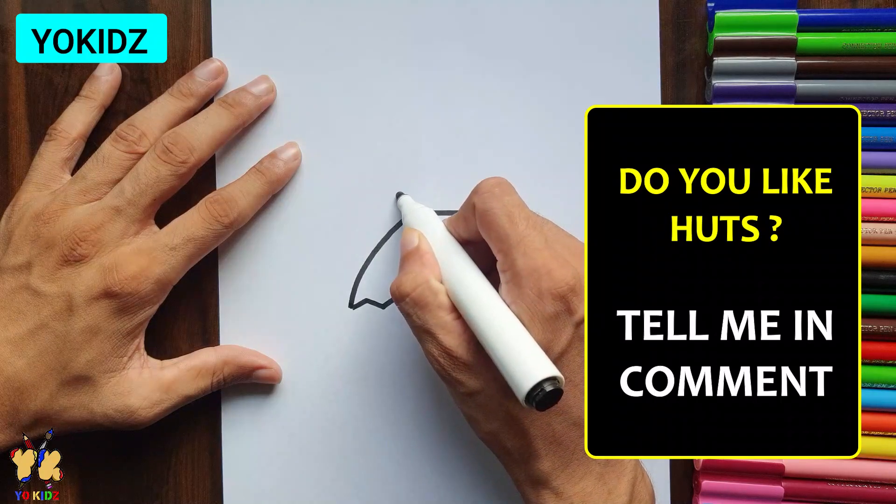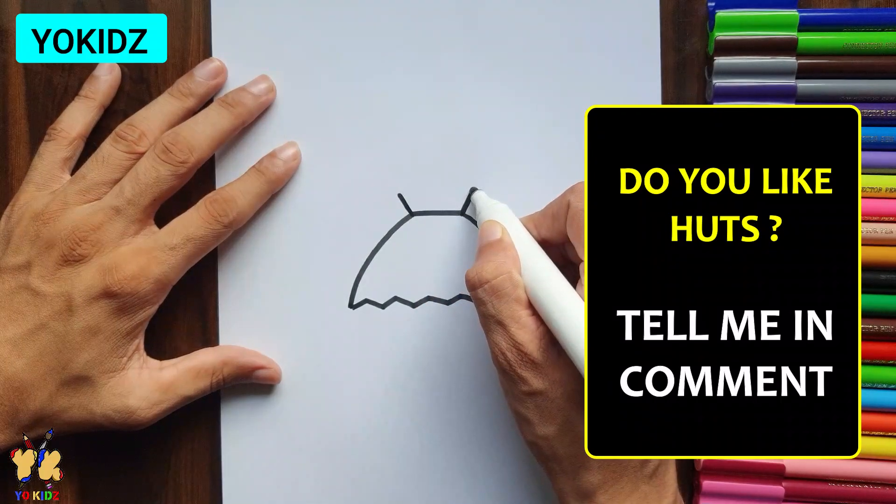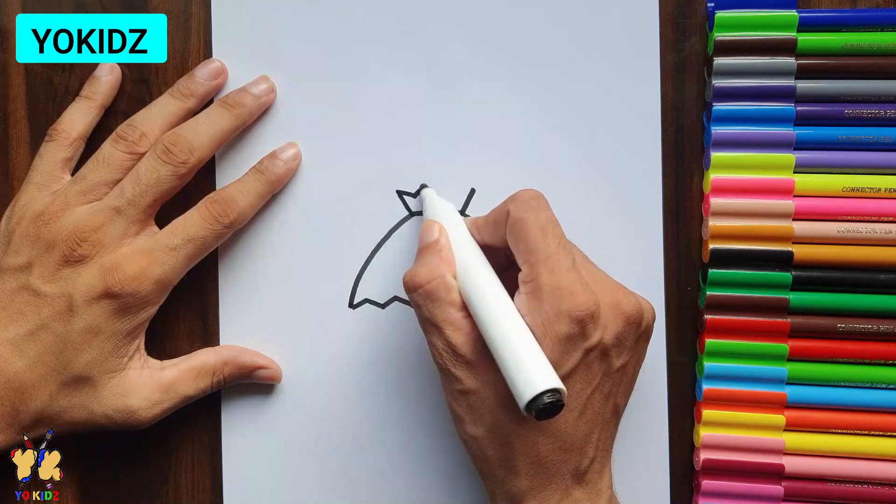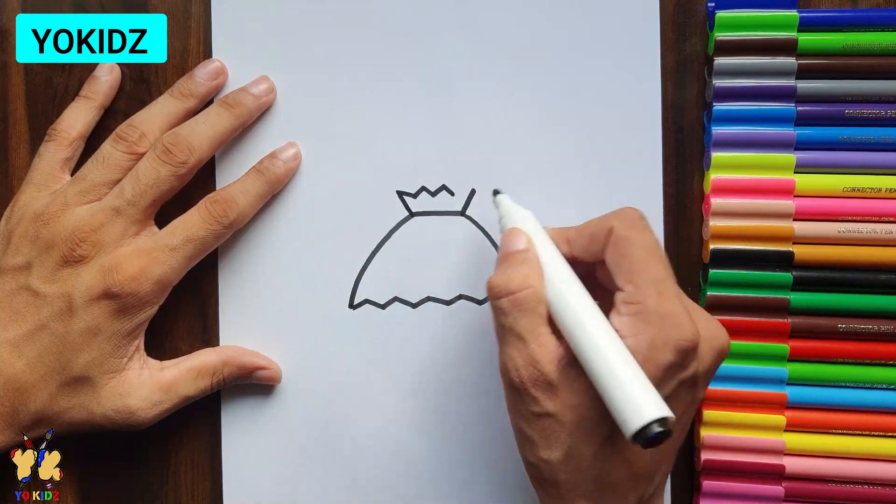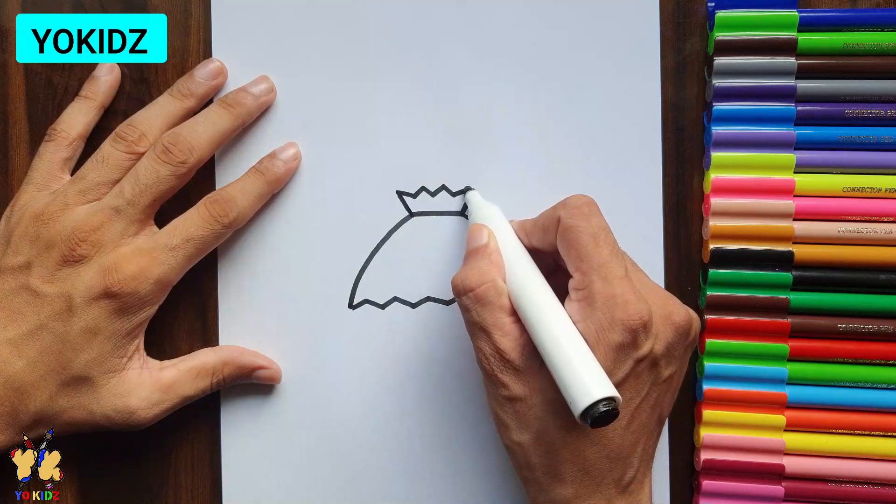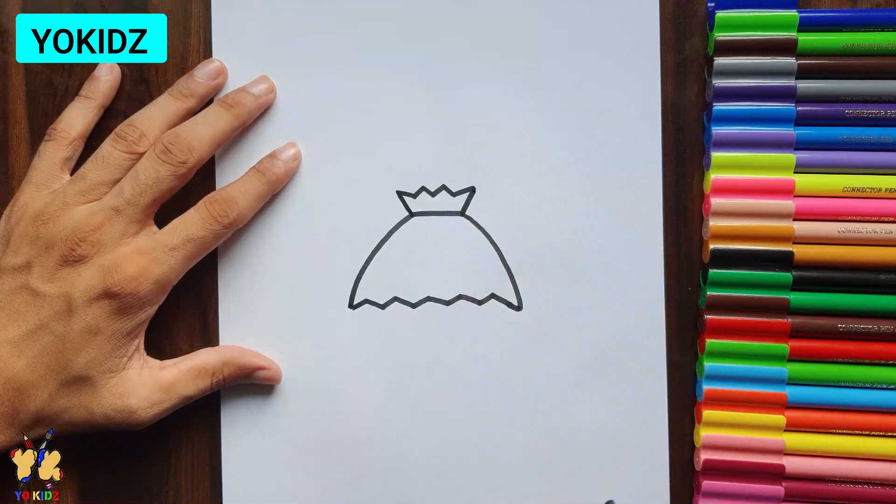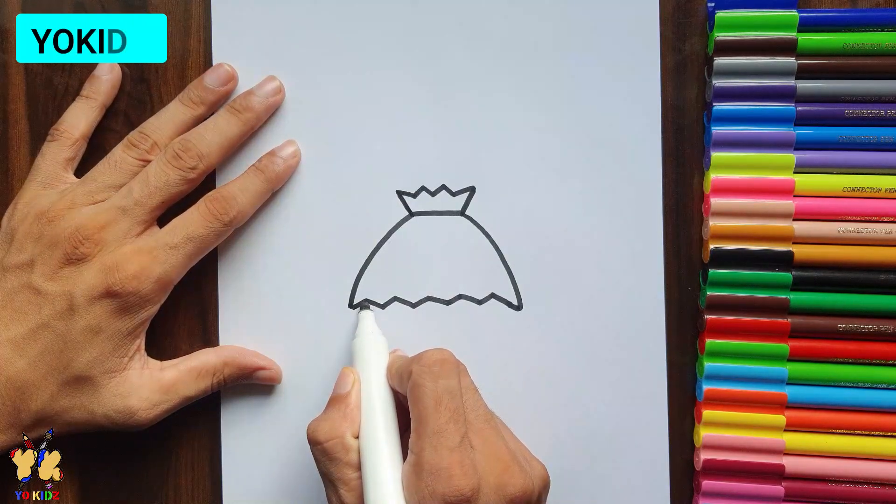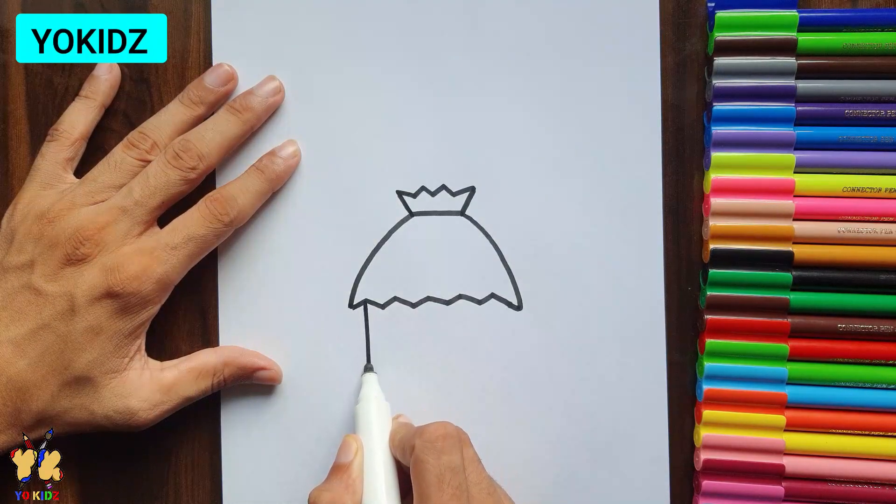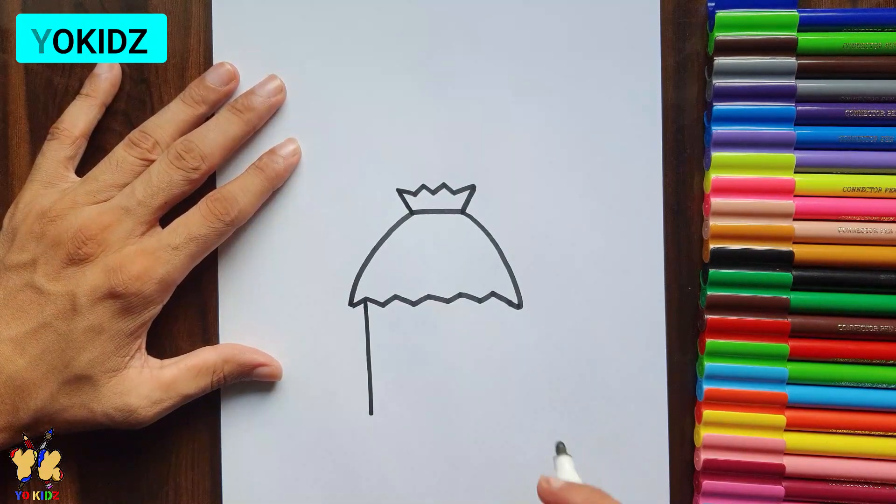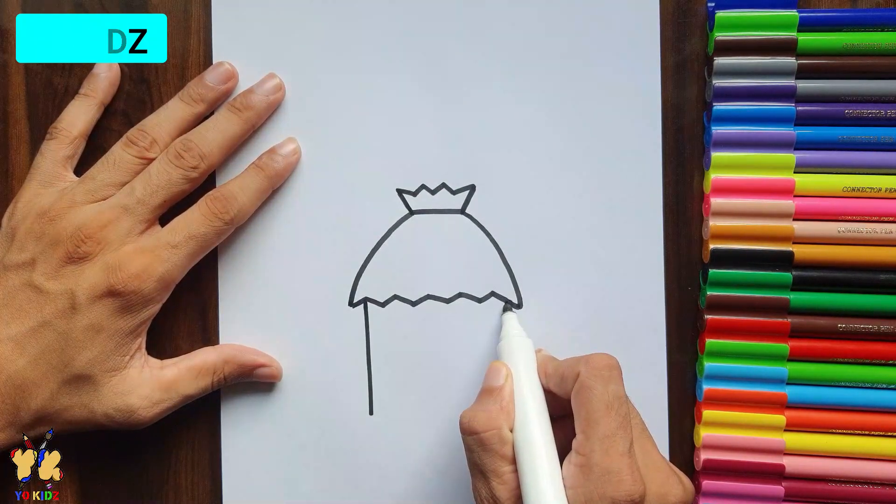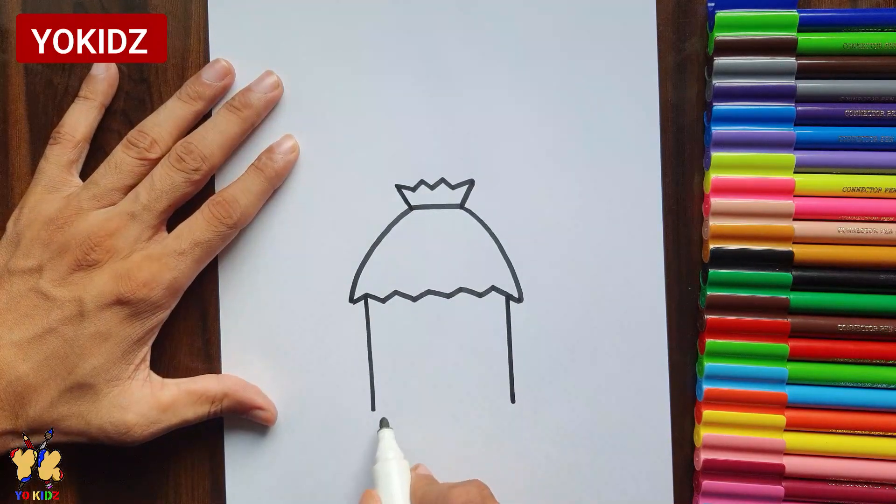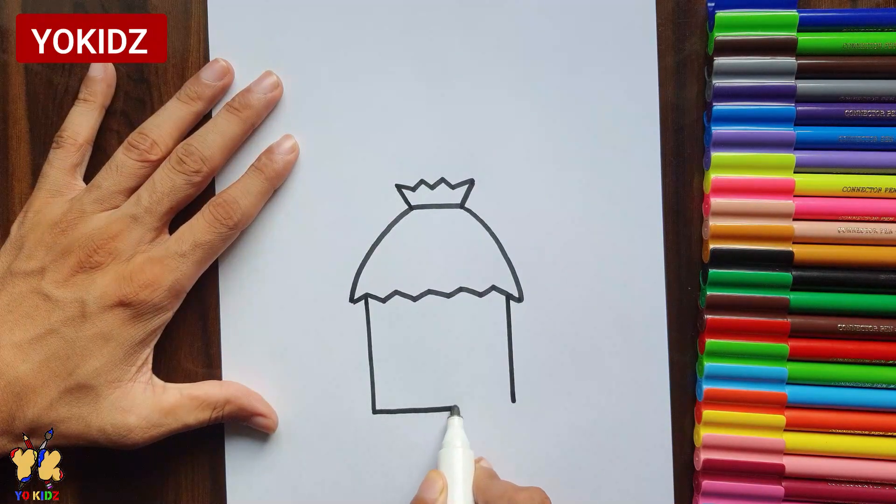Then moving forward to draw the small upper part of the hut. Then we'll make a wall by drawing a straight line like this, and then connect these two lines from the bottom.